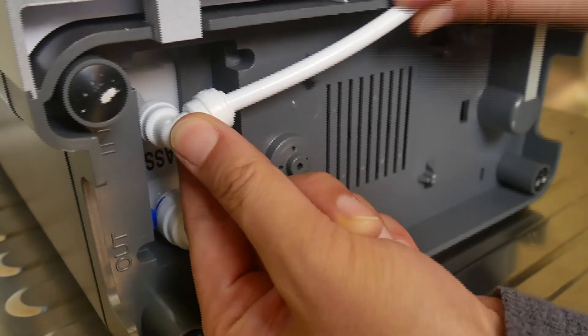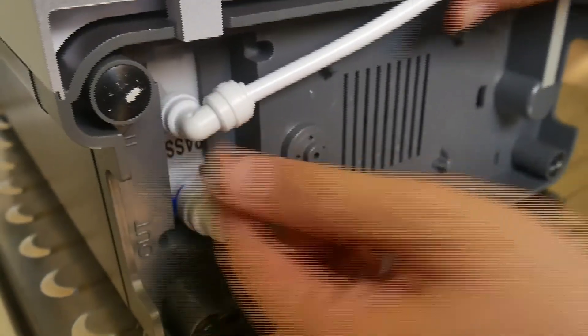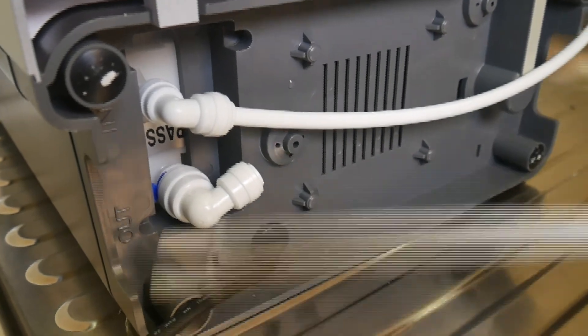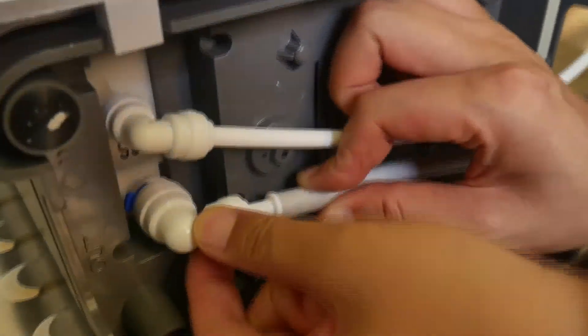Under the machine, there is an in and an out. Make sure you connect the white hose to the in fitting, and then you may connect the gray hose to the out fitting.